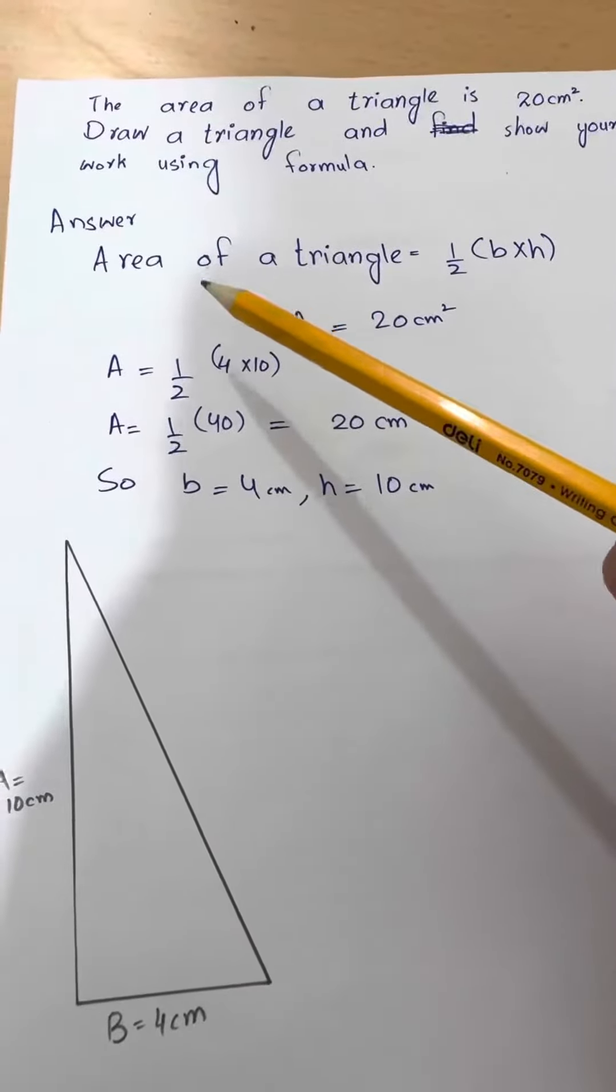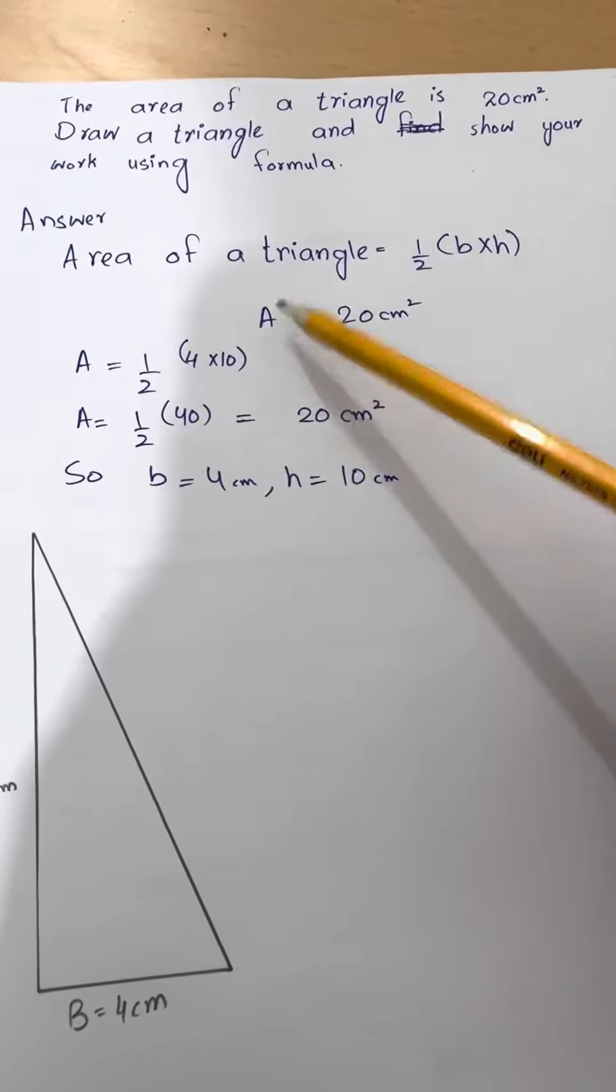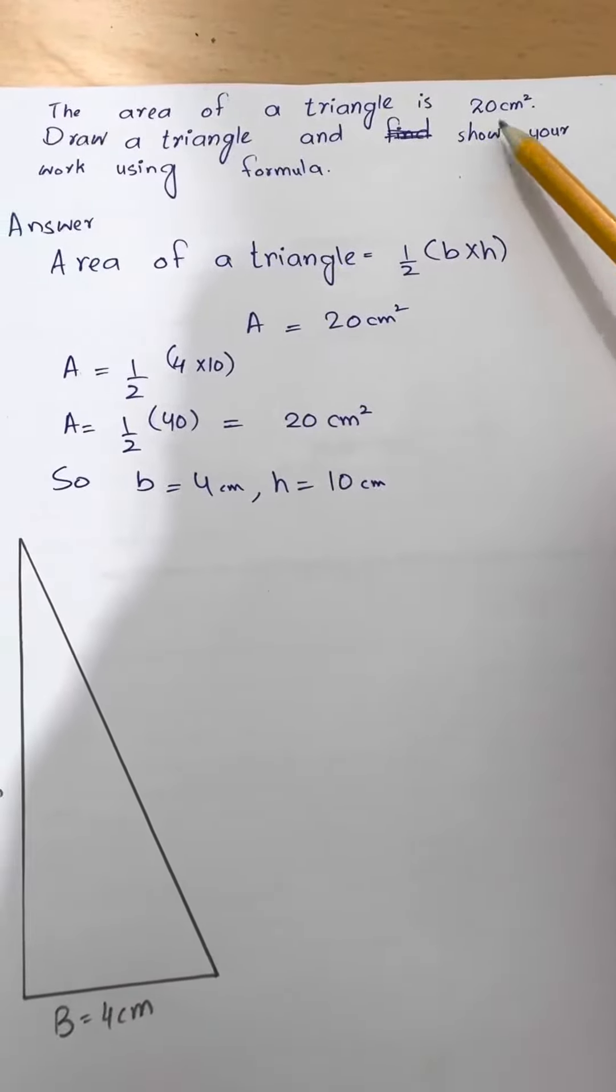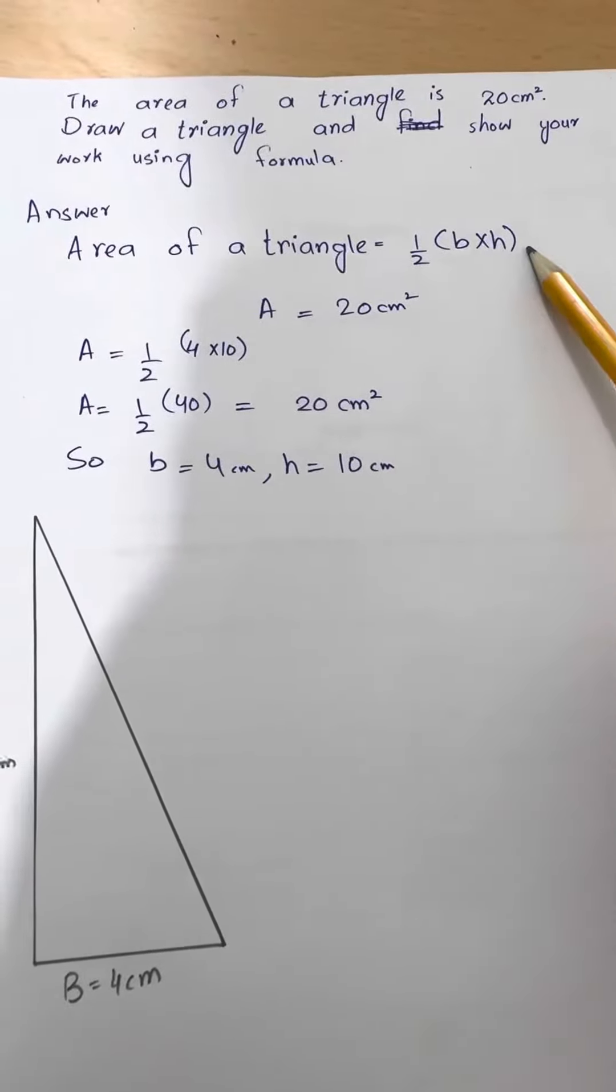So, we know that area of a triangle equals half base times height, but here area is given in the question, which is 20 centimeter square. So, we can say area is 20 centimeter squares, but we don't know how much is base and height.